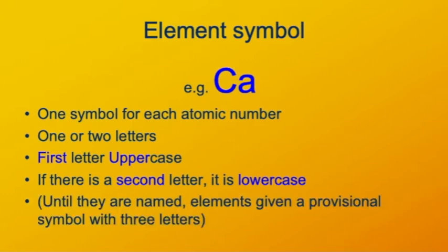There are exceptions. After elements are discovered, but before they are named, they are given a temporary symbol that basically spells out the atomic number using Greek or Latin root names. Atomic numbers are now into triple digits, so these temporary symbols have three letters.